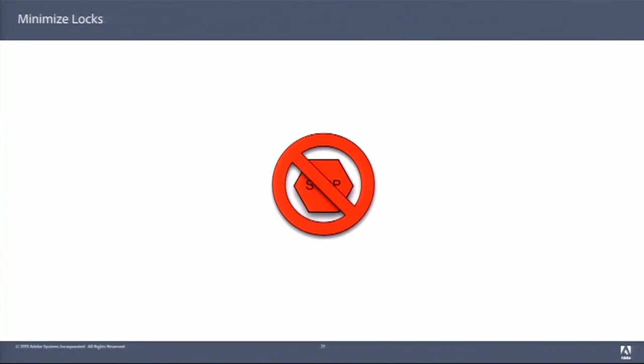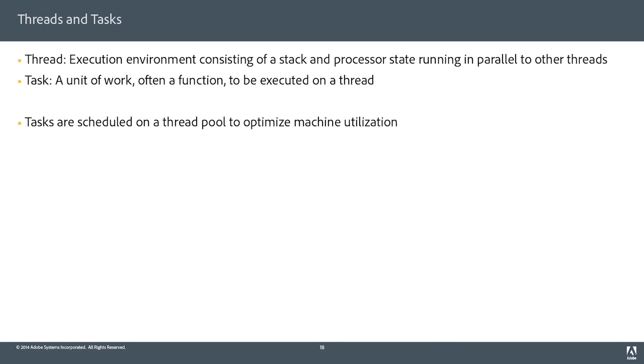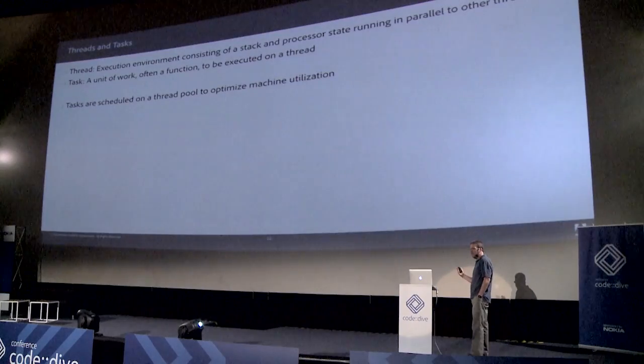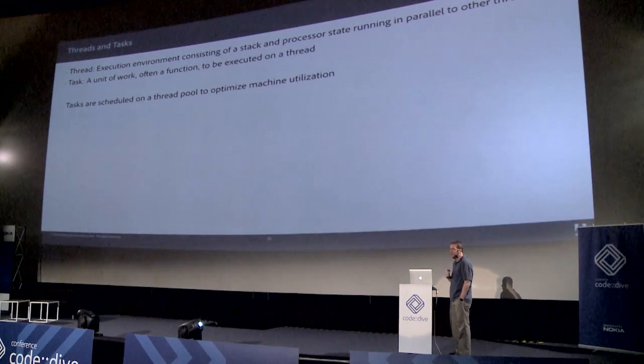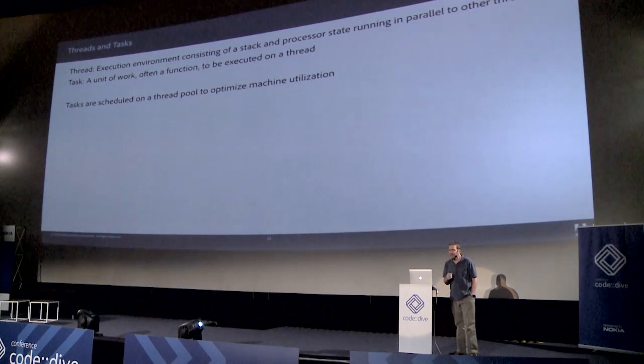A couple more definitions: a thread is an execution environment consisting of a stack and processor state, potentially running in parallel to other threads, or time sliced, or running concurrently if you've exceeded the number of cores. A task is a unit of work — often just a function executed on a thread. Tasks can be scheduled on a thread pool to optimize machine utilization. This is a very common technique.